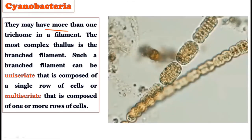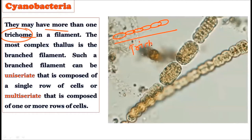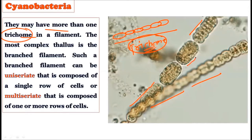There may be more than one trichome in a filament. The row of cells is called a trichome. This trichome may be more than one within a filament. Each filament may contain one or more trichomes.